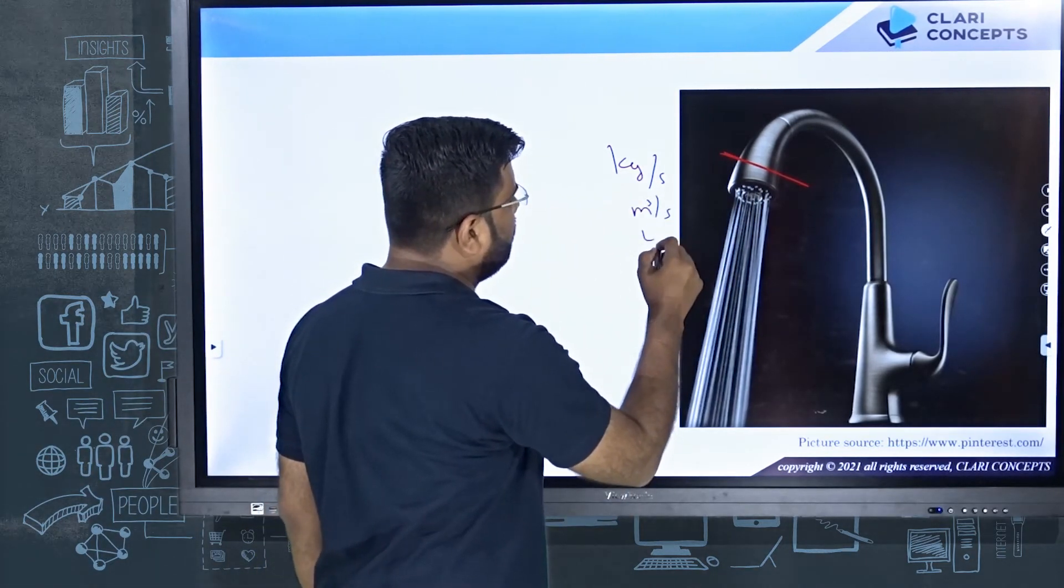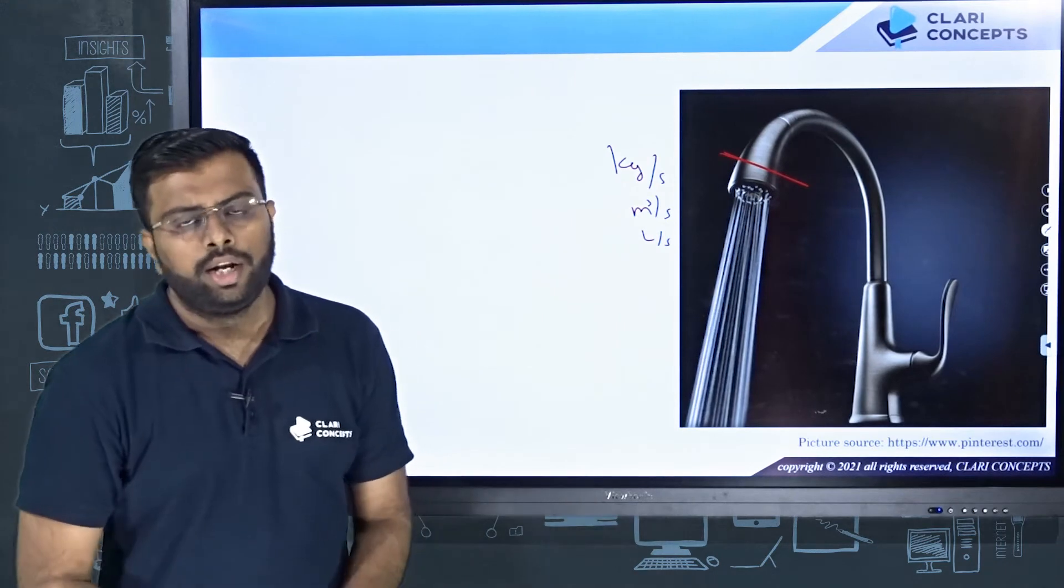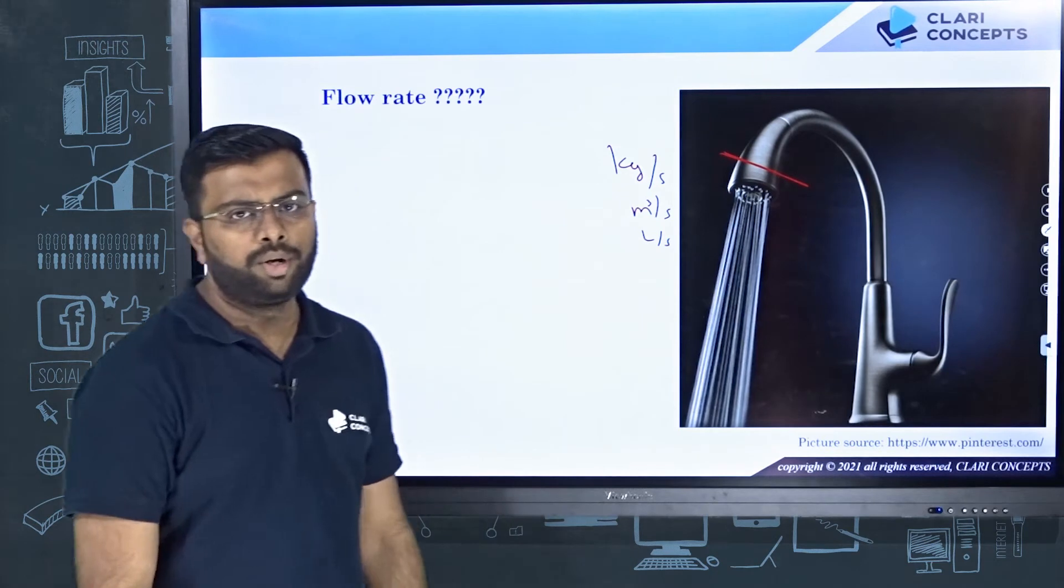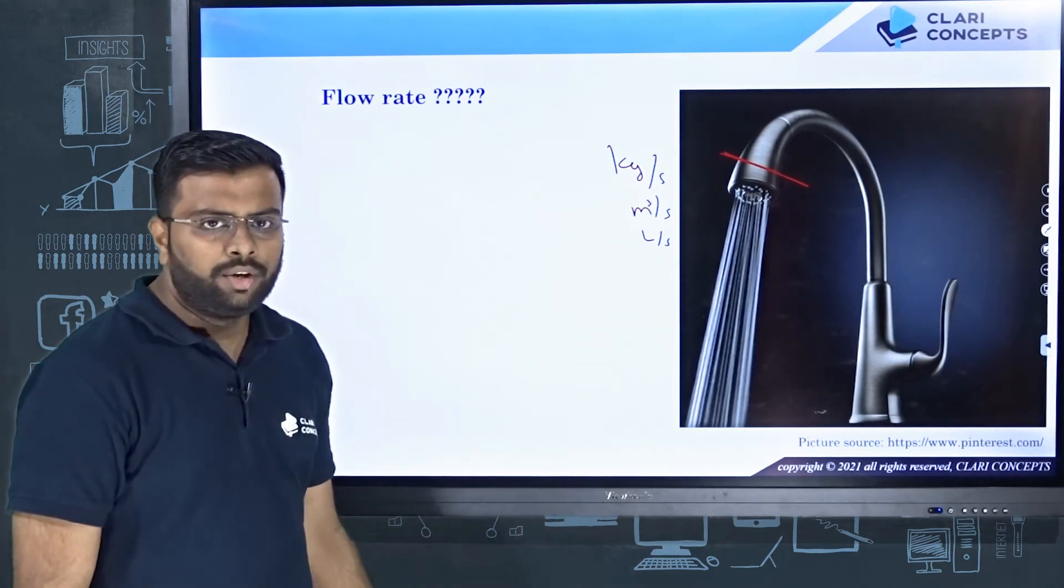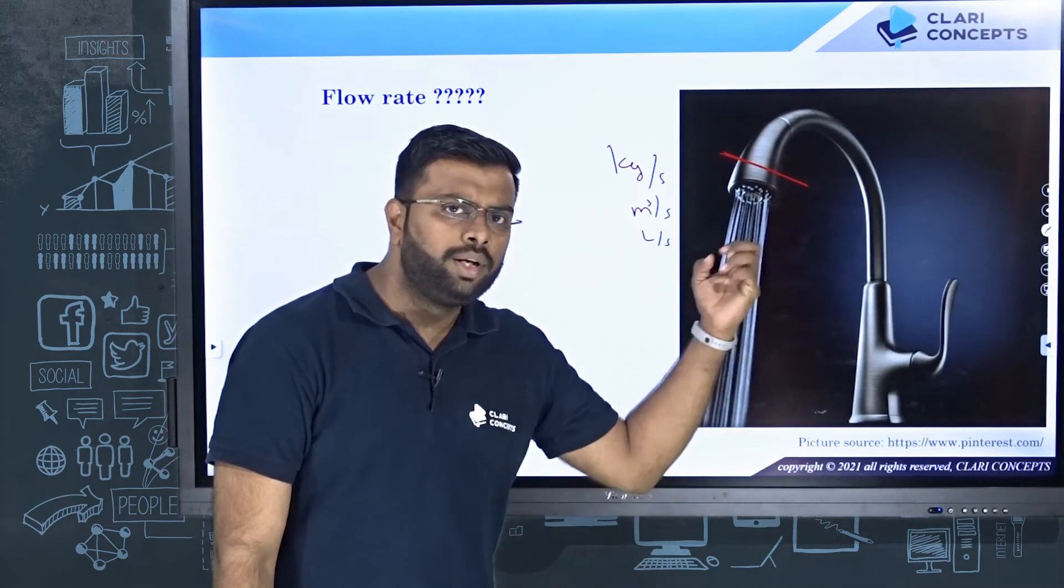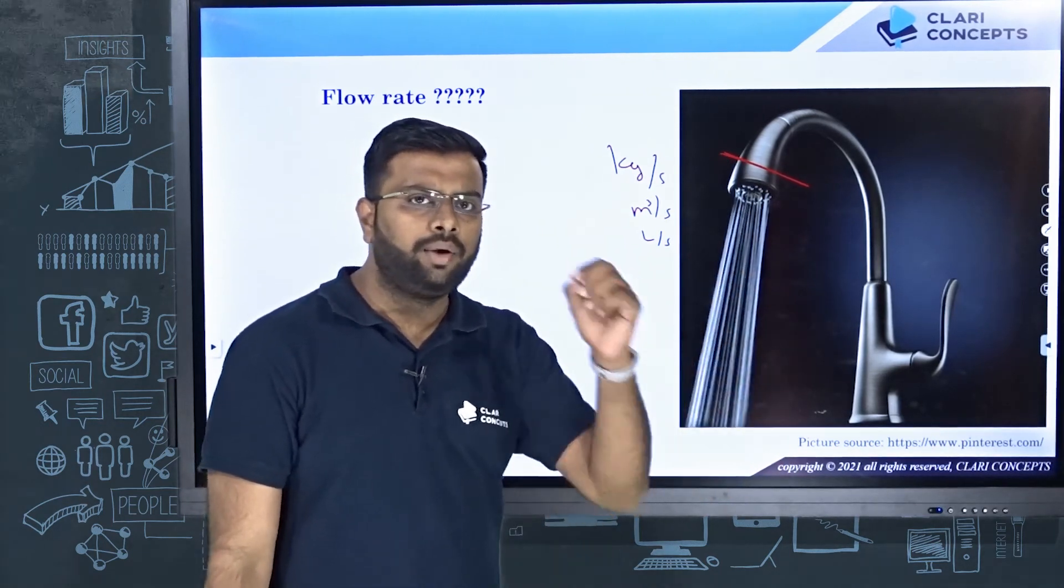Now my question is, can you now find out the flow rate of this particular water coming out of this pipe? Flow rate means you have to either find out the volume of the water coming out of this pipe or tap every second.